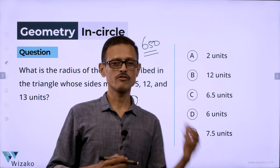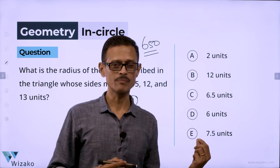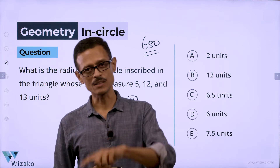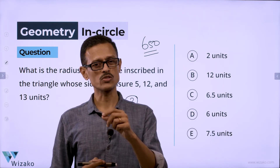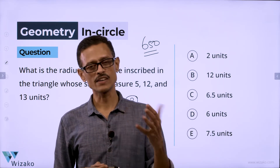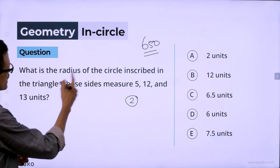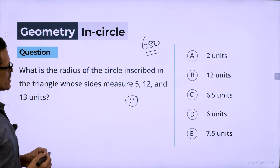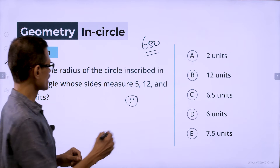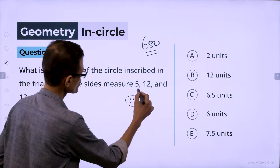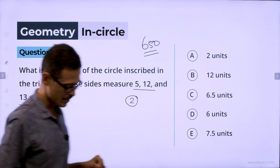So if you get this kind of question in the examination, apply the second method, but know the first method as it's going to be useful to solve a variety of other questions. The question is: what is the radius of the circle inscribed in the triangle whose sides measure 5, 12, and 13 units?